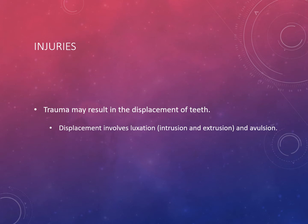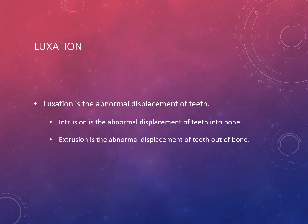Trauma can result in the displacement of teeth. Displacement involves luxation — meaning the tooth isn't positioned the way it should be — as well as intrusion, extrusion, and avulsion. Dental images allow for evaluation of those structures after tooth displacement to assess the bone before attempting to splint or save the tooth. Luxation is defined as the abnormal displacement of teeth.